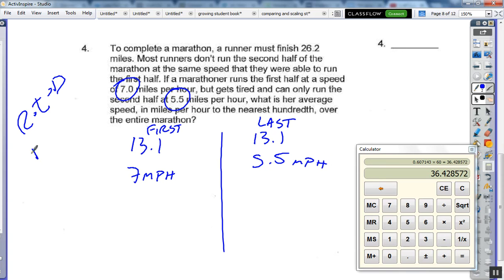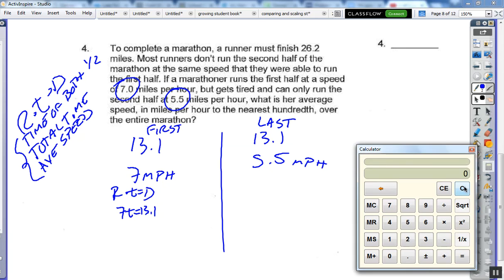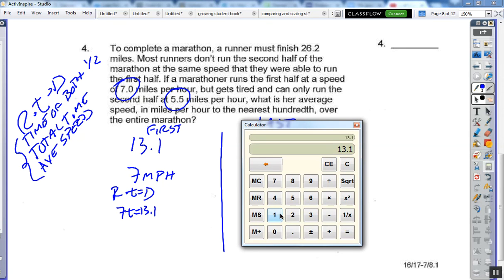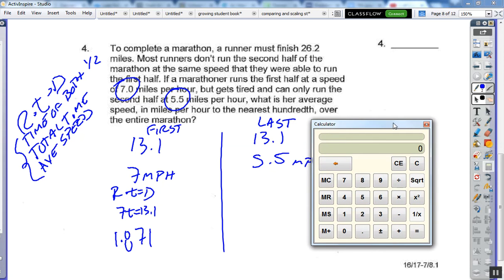So we need to first find the total time, and to do that we need to find the time of both halves. And then finally we can find the average speed. So this is our game plan right here. To find the time, we know that rate times time equals distance. So we know 7t equals 13.1. So 13.1 divided by 7. And over here, same process, 13.1 divided by 5.5. And then I'm going to add to that my first half time, which is 1.871. And so it took us a total of 4.2528 hours.